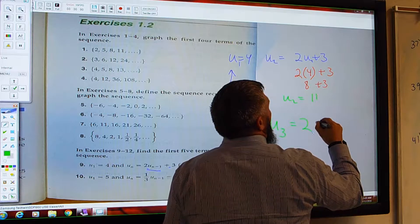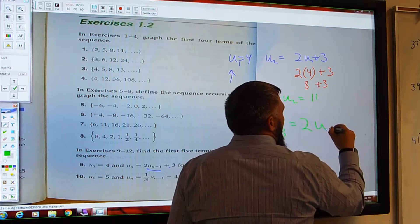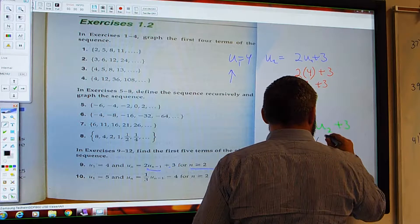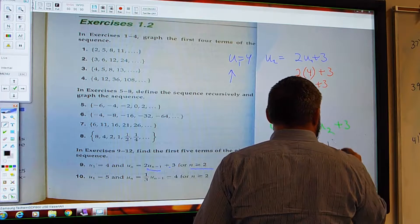Everything we've been doing before with the U... I use U naught. In the book, they're not using that. What they're using is U sub 1. And they're saying that U sub 2 is equal to what? U sub 1 plus the pattern, plus whatever the pattern is, right?